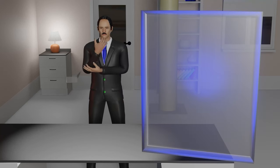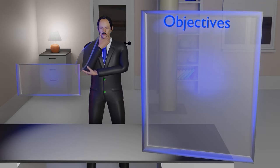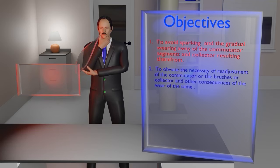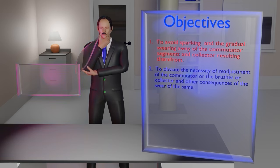Tesla's objectives of the invention were: First, to avoid sparking and the gradual wearing away of the commutator segments and collector resulting therefrom. Second, to obviate the necessity of readjustment of the commutator or the brushes or collector, and other consequences of the wear of the same.